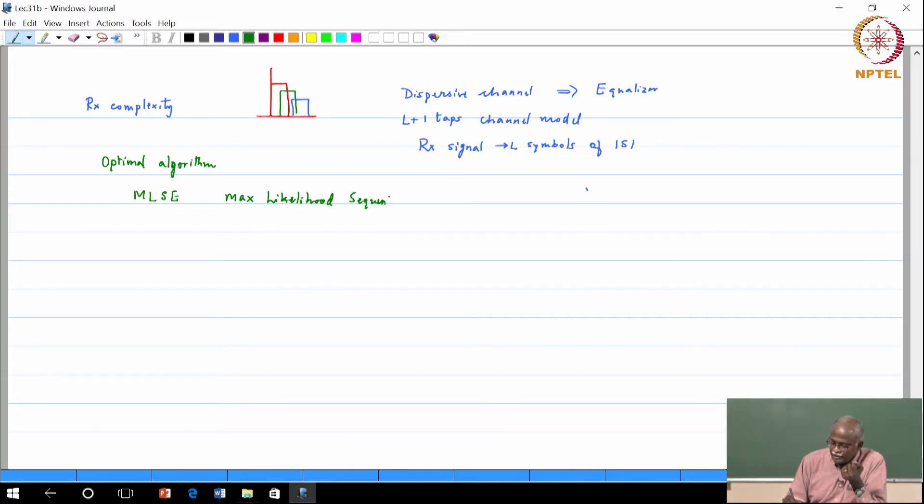So basically this is one of the optimal algorithms. There is one which is called maximum a posteriori algorithm, but most of the receivers that we encounter actually implement the MLSE, maximum likelihood sequence estimation. The Viterbi algorithm has got a complexity which is proportional to the number of your constellation size M is your constellation size raised to the power L where L is the number of taps.